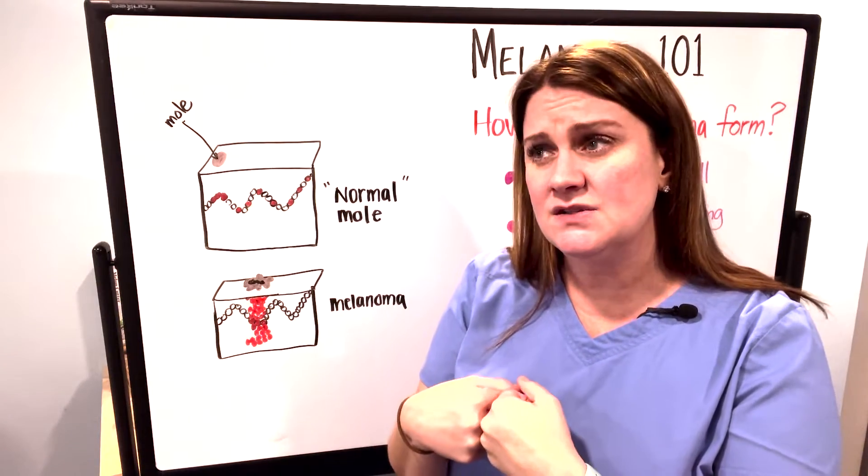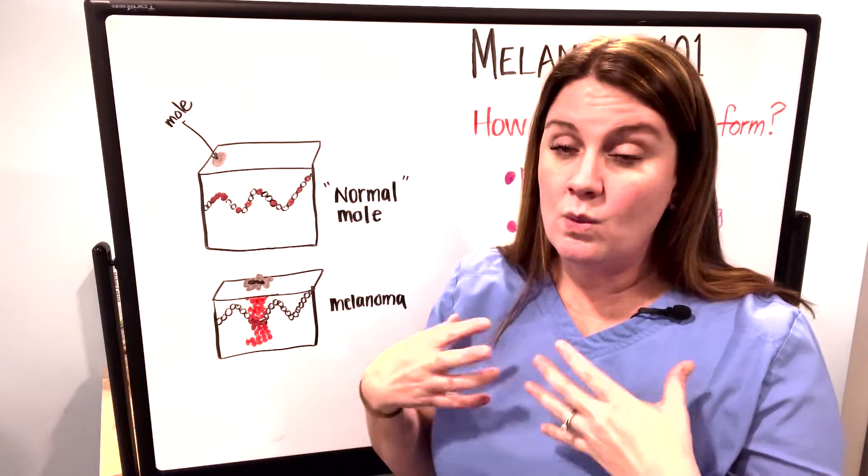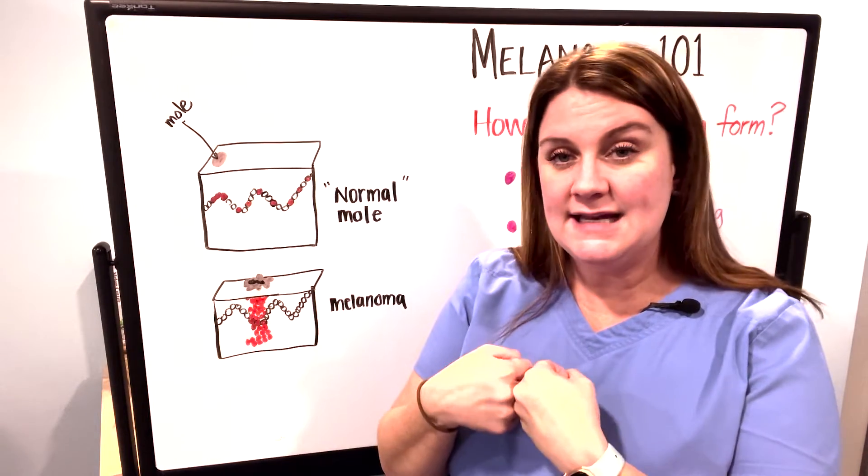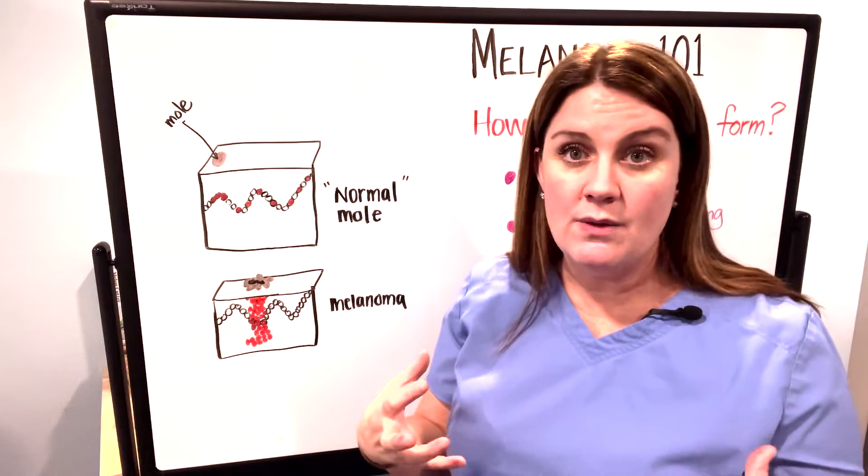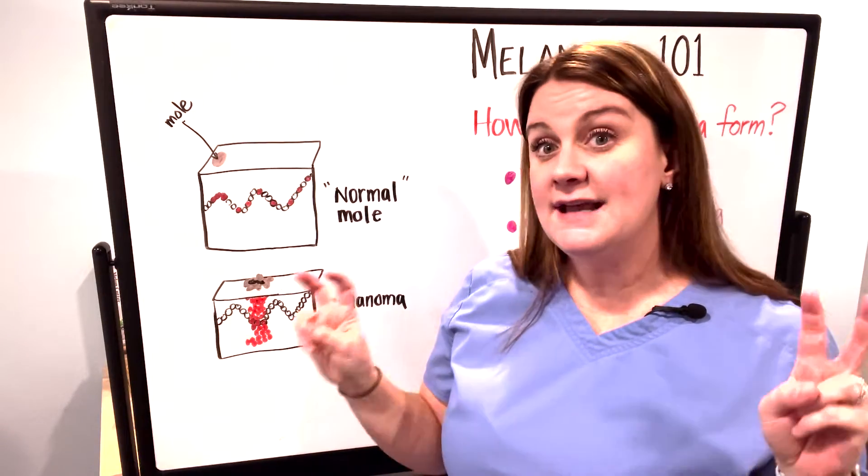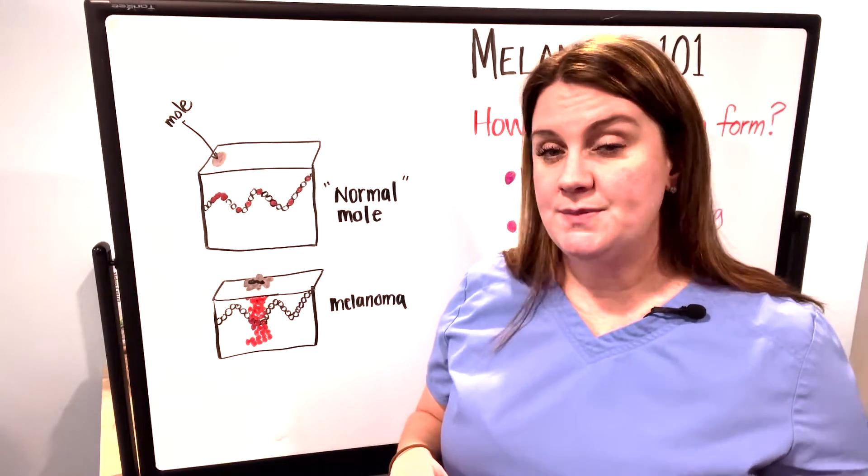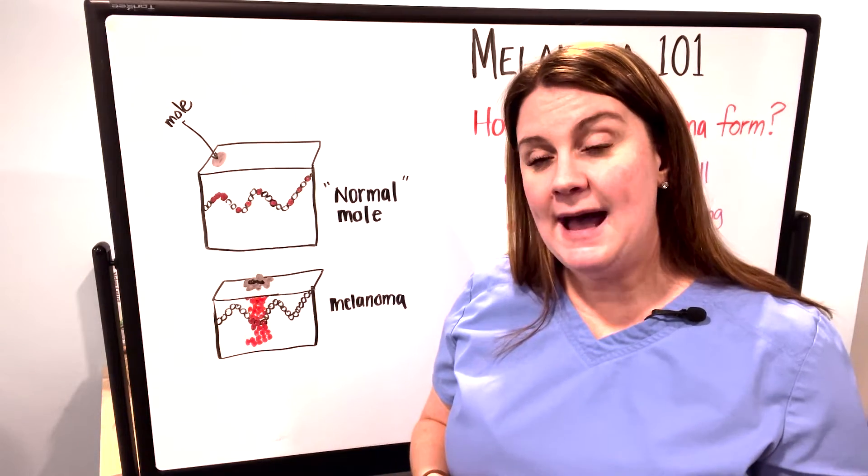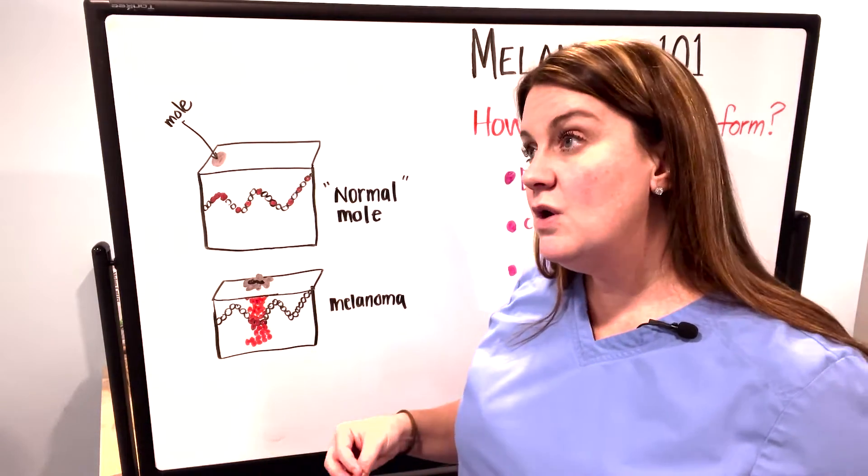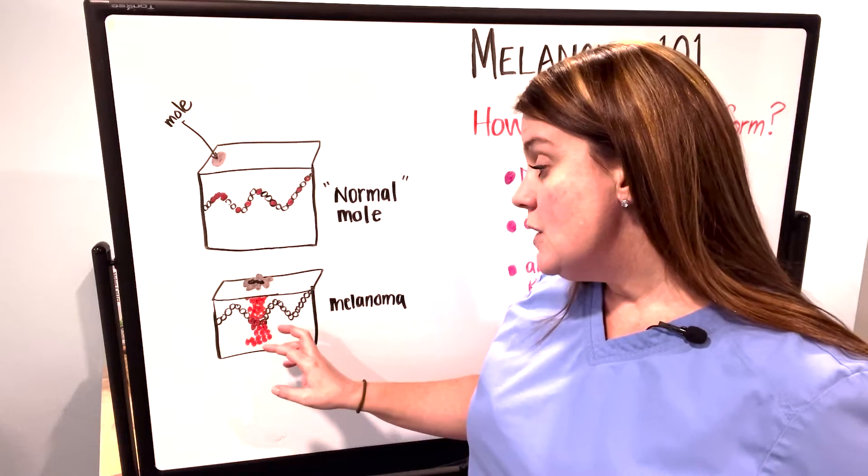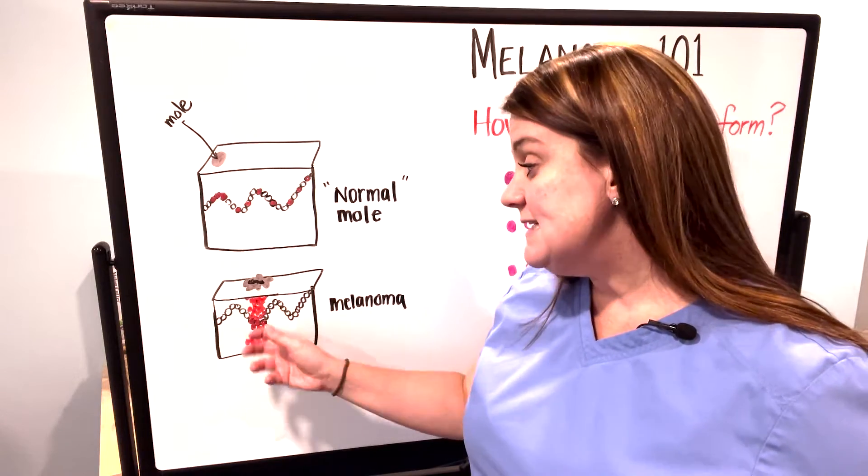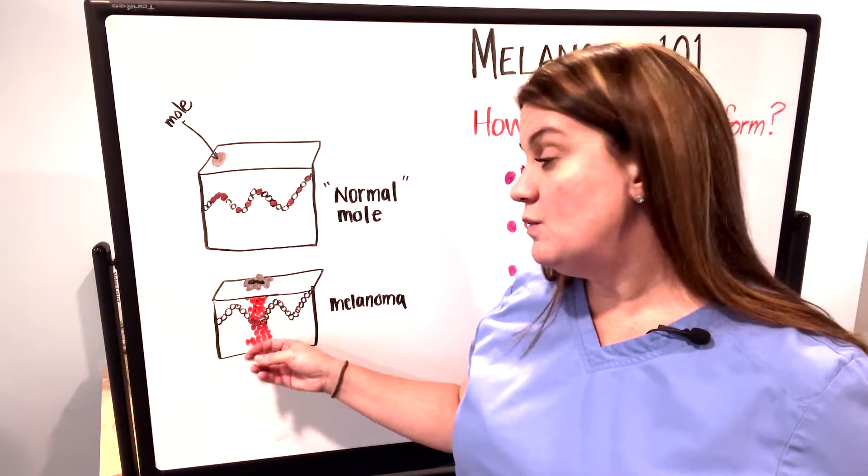Cancer cells have many abnormalities, but one is that they lack that inhibition to stop growing and they lack the life cycle they're supposed to have. The cell will continue to divide itself and continue to grow and clump up on itself.